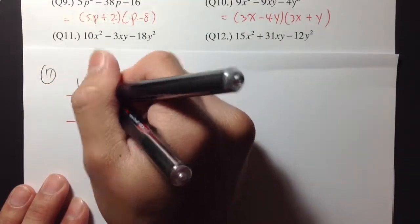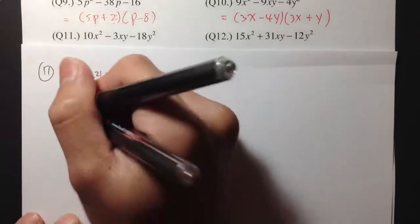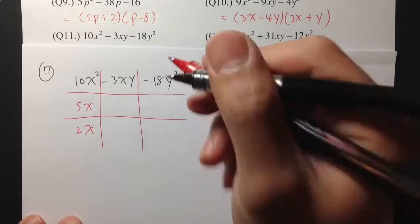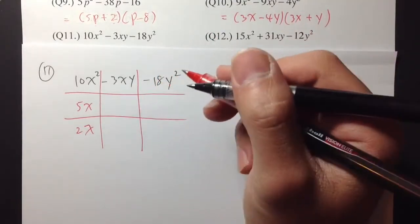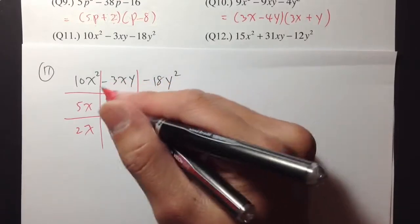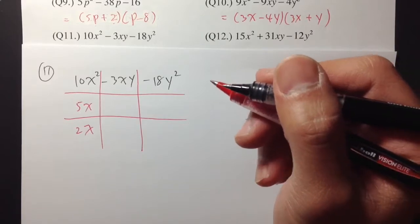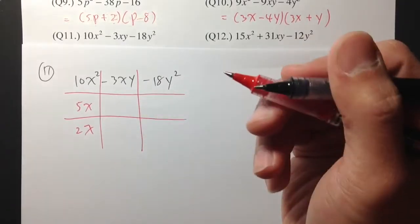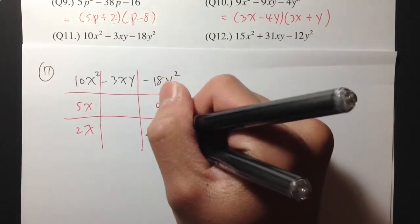And then take the tic-tac-toe box, like this. To produce 10x squared, let me try with 5x and 2x first. And then to produce negative 18y squared — to produce negative 18 — and then later I have to somehow get negative 3 in the middle. It's kind of hard to do right here, so I'm just going to put down my initial guess first.